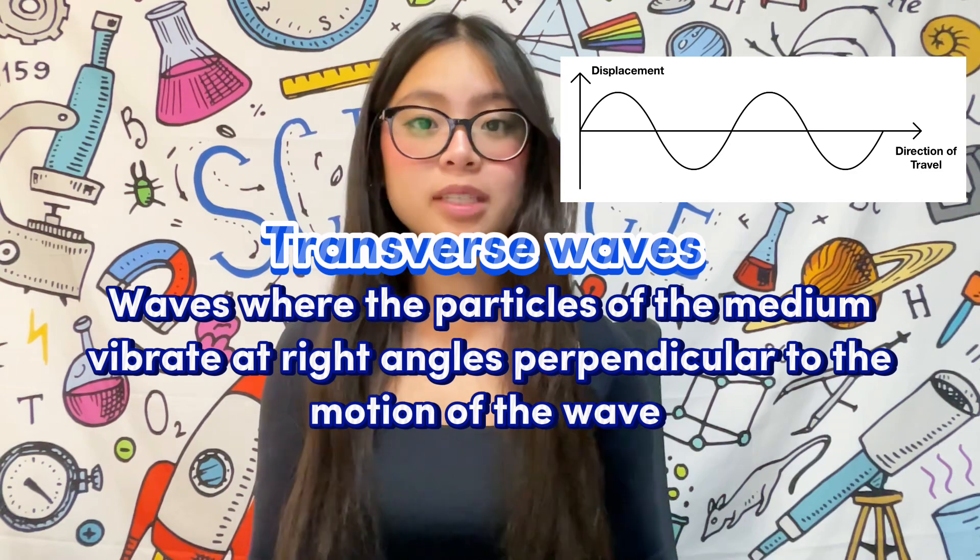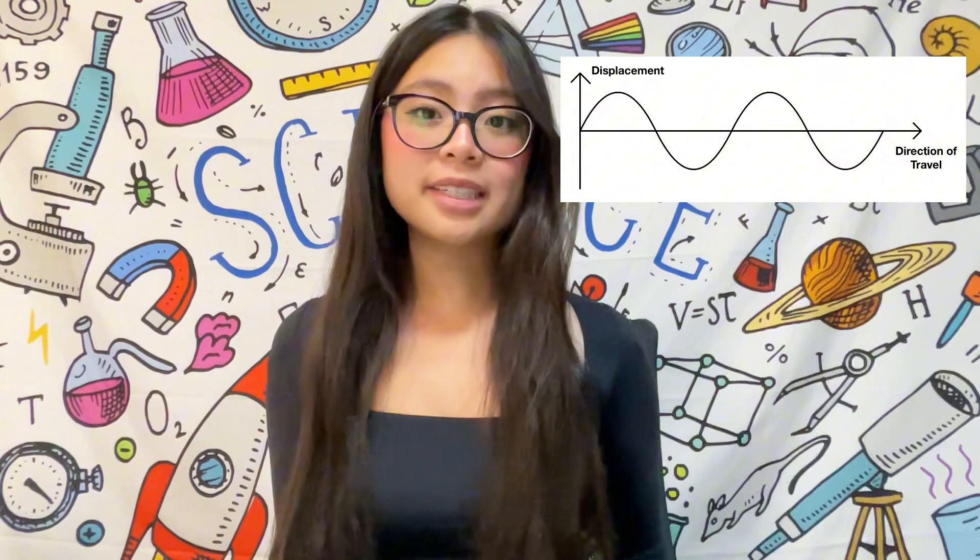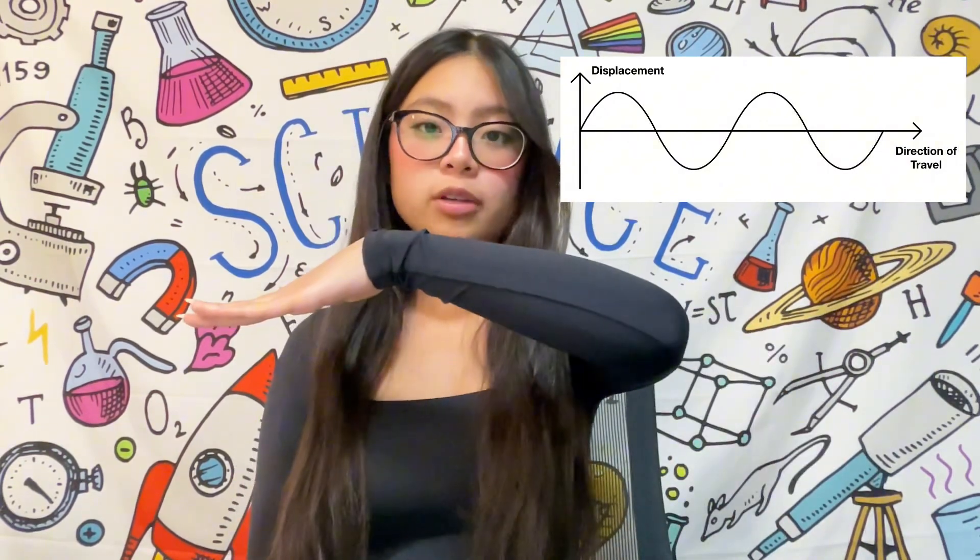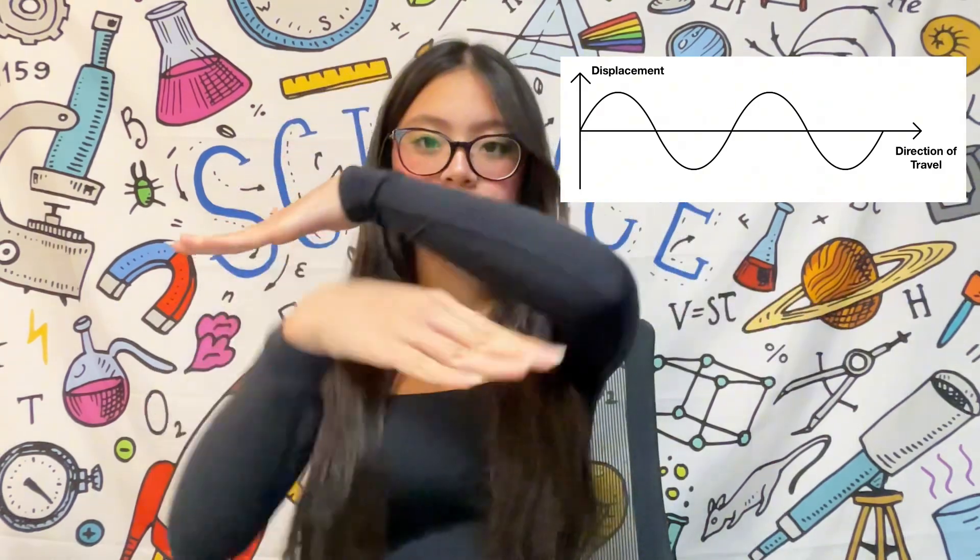Some examples of transverse waves are surface water waves and waves on a rope. So practically, this means that the wave is traveling this way, but the particles of the medium are traveling this way. So it'd be like your standard wave that looks like this.